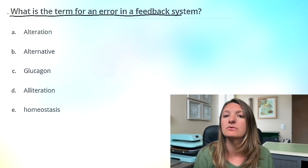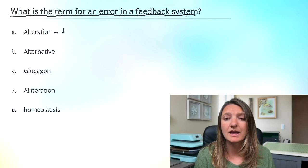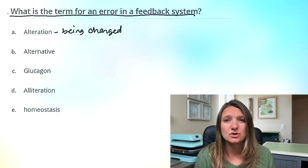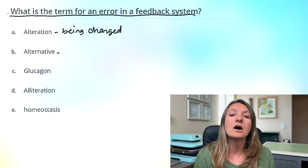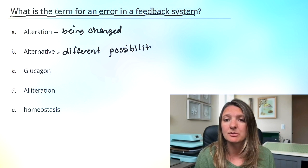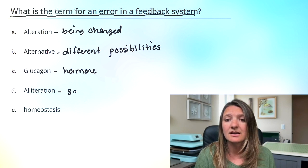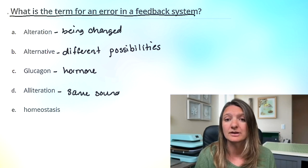Question three: What is the term for an error in a feedback system? Let's look at all of these vocabulary words and define them. A, alteration — that is going to be something being changed or altered. B, alternative — that is going to be different possibilities. Those two could potentially be the term for the error. C, glucagon — that's randomly thrown in there; it's a hormone the pancreas produces that helps with glucose regulation.